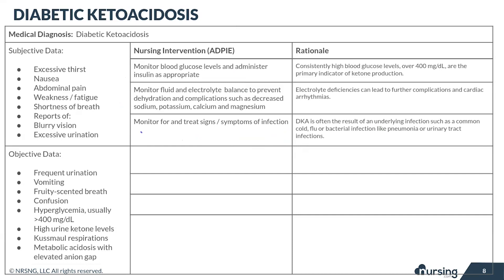The next intervention is focused on finding out why the patient is in DKA. A common cause is infection, so you want to look for signs of infection so we can treat it. Remember, if the patient is sick, this will make their insulin needs go up, so we need to treat the infection to get insulin requirements back down to normal. Infections that may commonly cause this for a diabetic patient include things like pneumonia and a urinary tract infection.